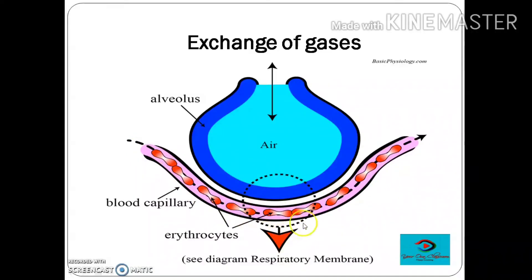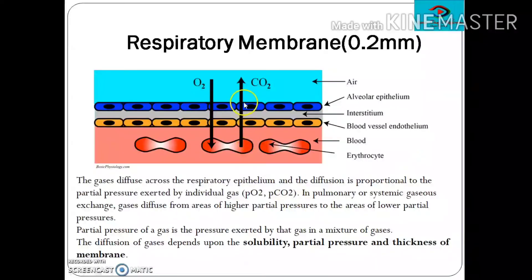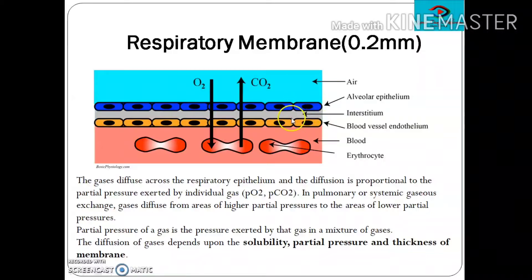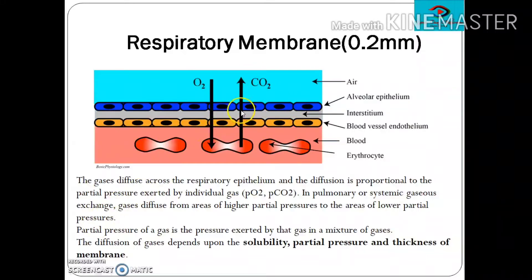In order to look into the respiratory membrane we have to see the ultrastructure. Here we can see the squamous epithelium of the alveoli and the blood vessel endothelium, and in between these two epithelia there is an interstitium. As you know, beneath every epithelial cell there is a basement membrane — one beneath the alveolar epithelium and one above the blood vessel endothelium.